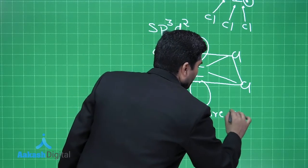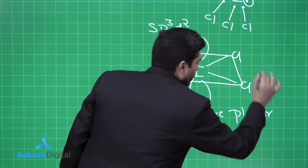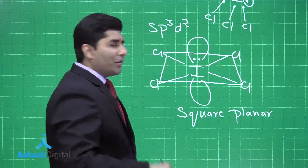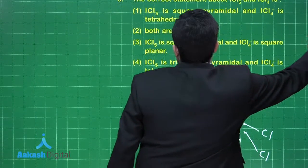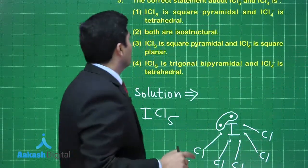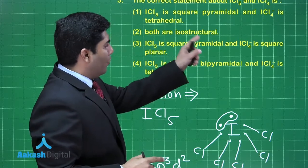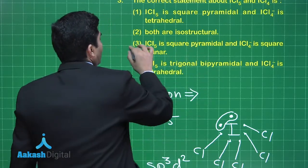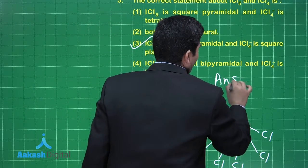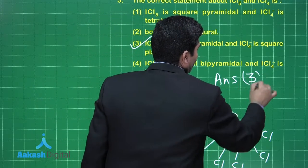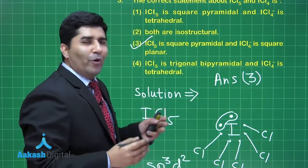So ICl₅ is square pyramidal and ICl₄⁻ is square planar. The correct option is option number three. Let's move on to the next question.